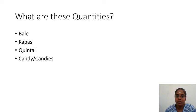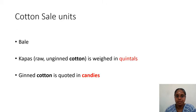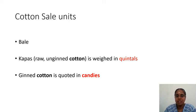A bale is a certain kg of raw material — you can find the exact weight online. Kapas is unginned cotton with seeds, obtained from farmers. People who do ginning buy kapas from farmers, gin it, and sell it. Unginned cotton is weighed in quintals, while ginned cotton is quoted in candies in the cotton market.